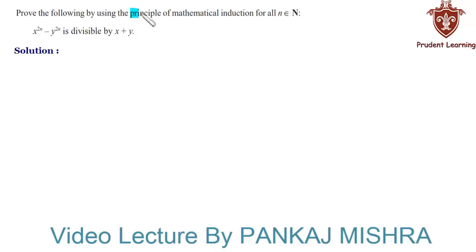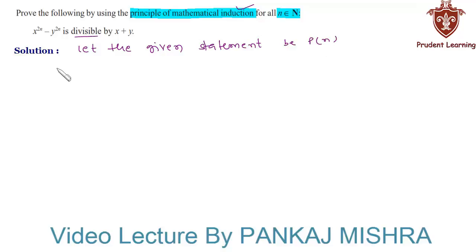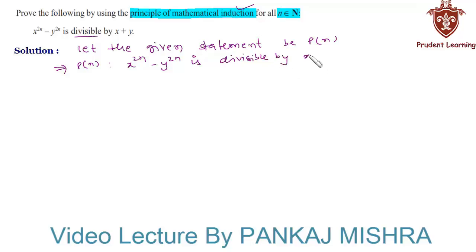We are required to prove the following by using the principle of mathematical induction for all n belonging to natural numbers. The given statement is: x raised to 2n minus y raised to 2n is divisible by x plus y. Let the given statement be P(n), such that x raised to 2n minus y raised to 2n is divisible by x plus y.